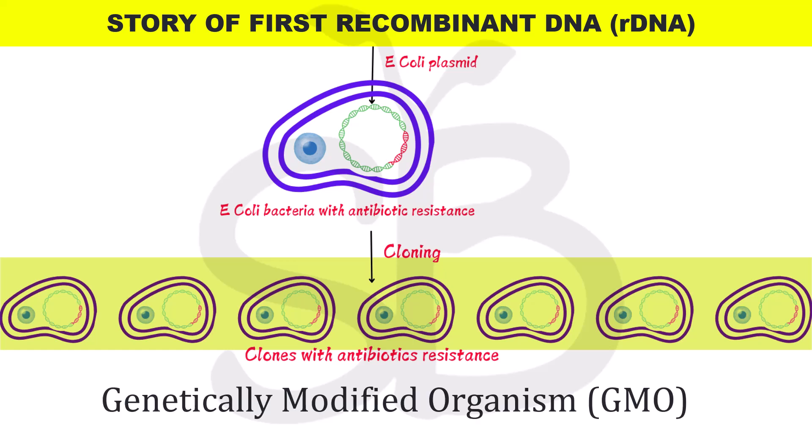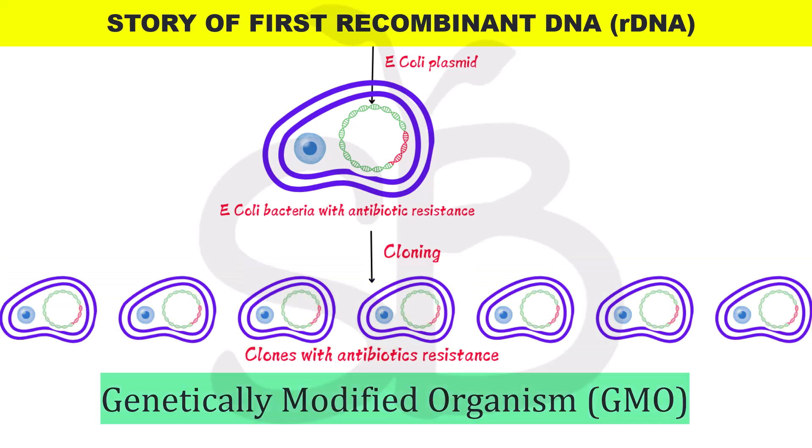The whole organism produced this way is called a Genetically Modified Organism, or GMO. There are changes in the genetic makeup of the whole organism.